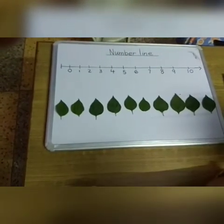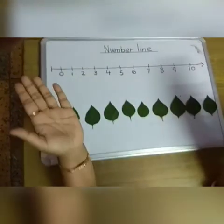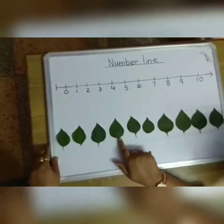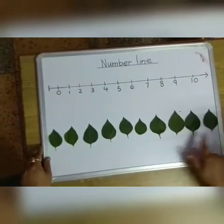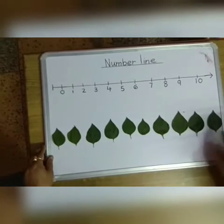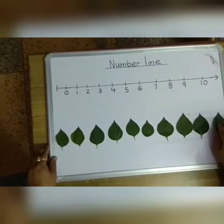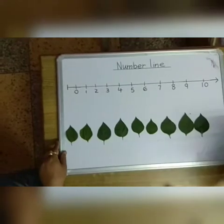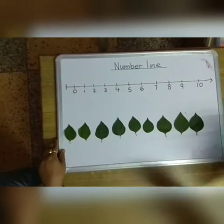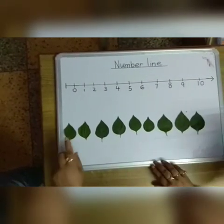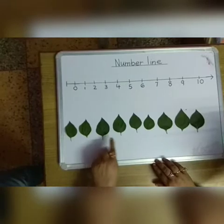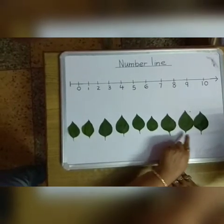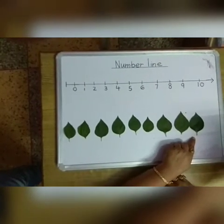How we will do this activity? I will tell you. We have 1, 2, 3, 4, 5, 6, 7, 8, 9, 10 leaves. What we will do? We will remove one leaf from here. Now let's count how many leaves: 1, 2, 3, 4, 5, 6, 7, 8, 9. Now we will remove one more leaf from here.